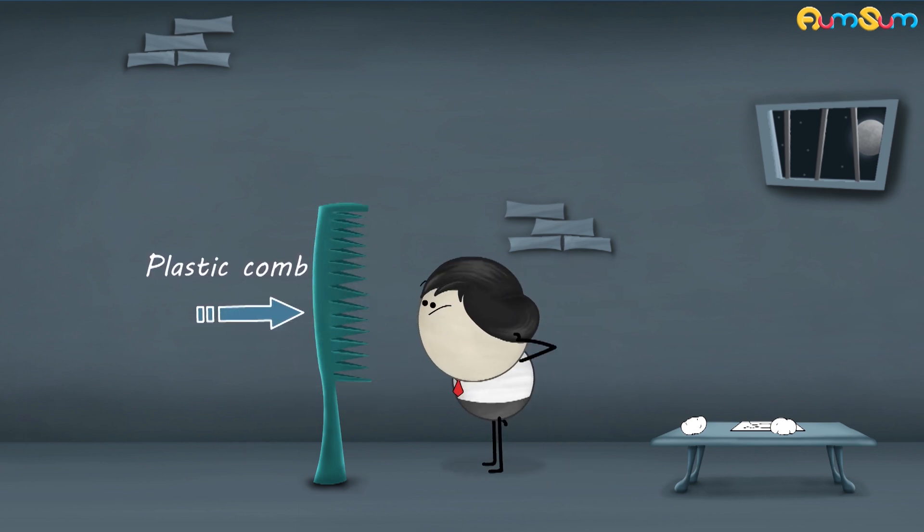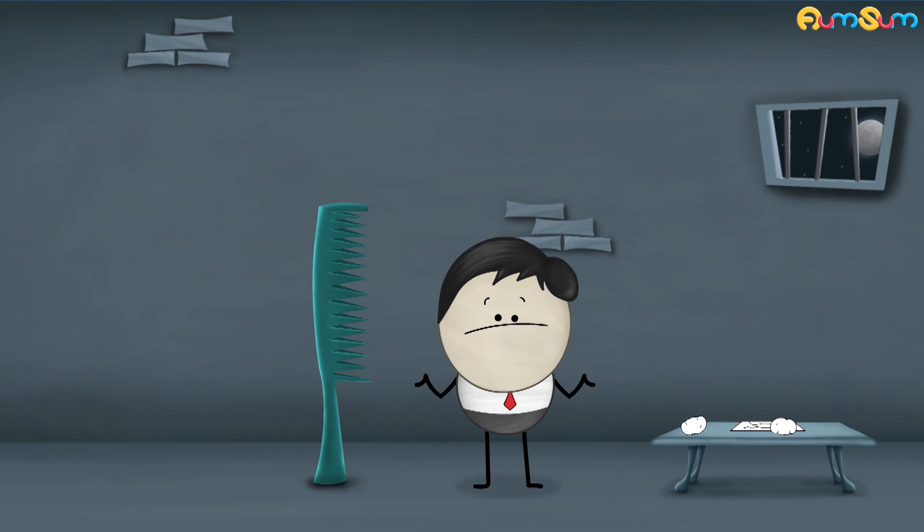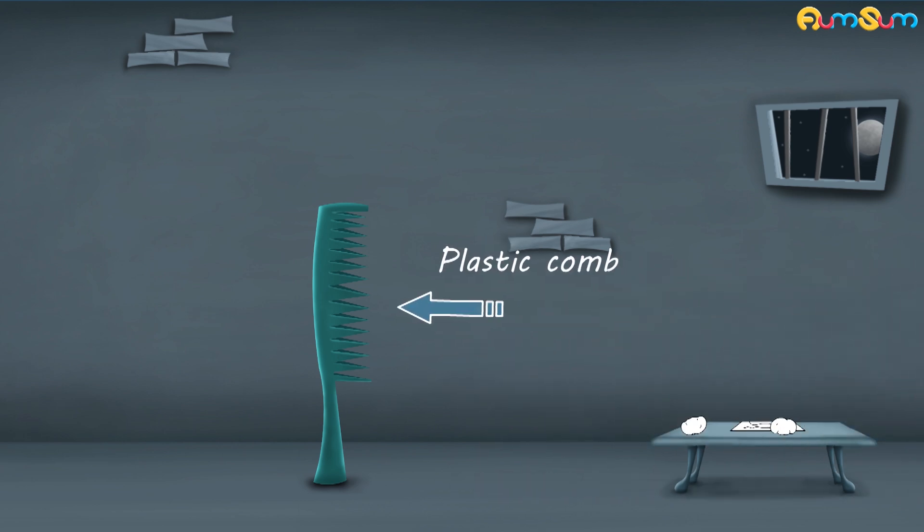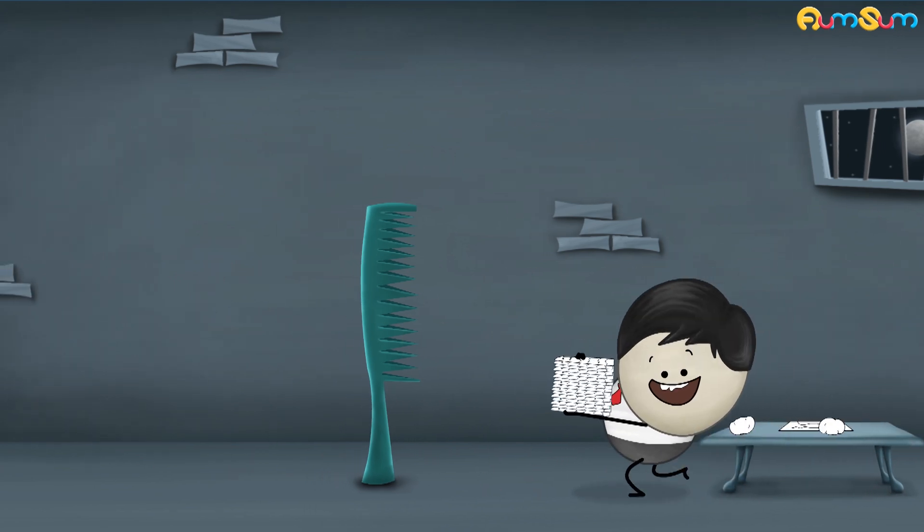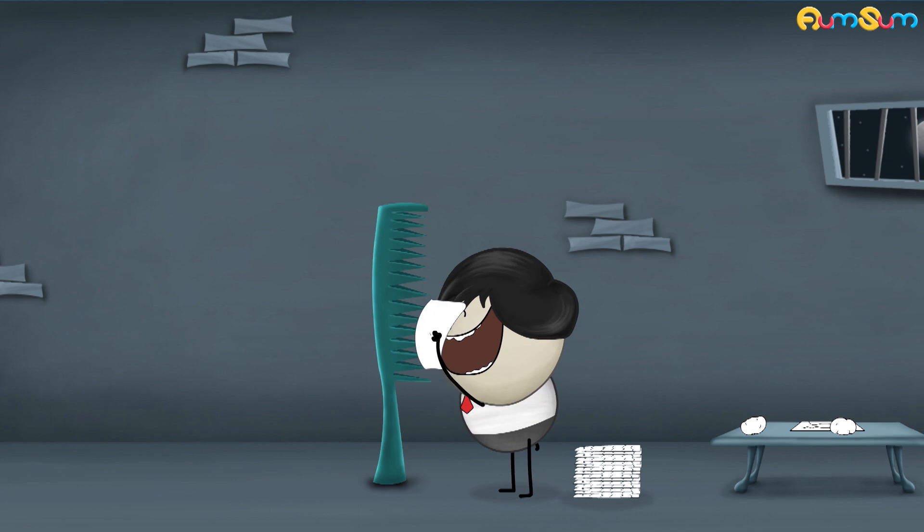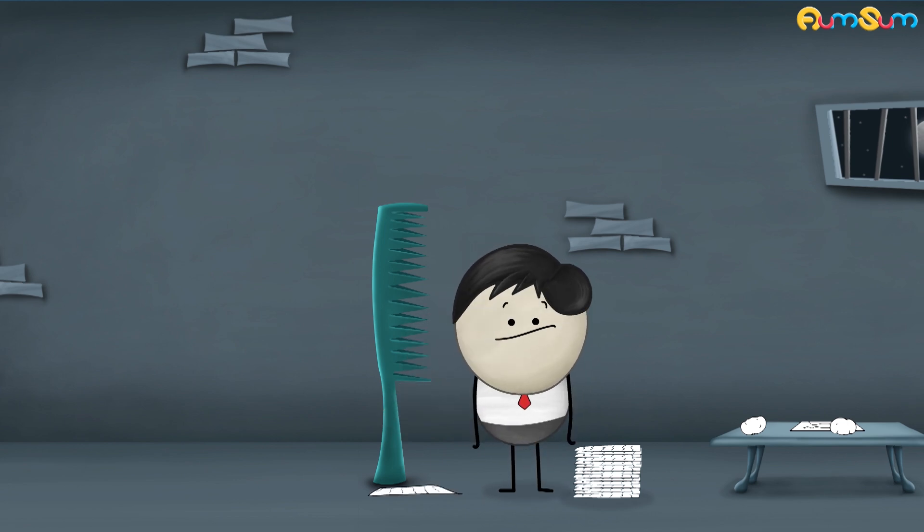So, was the plastic comb initially electrically neutral or electrically charged? Initially, the plastic comb was electrically neutral. That means it had equal number of positive and negative charges. Hence, it did not have the ability to exert a force and attract the pieces of paper.